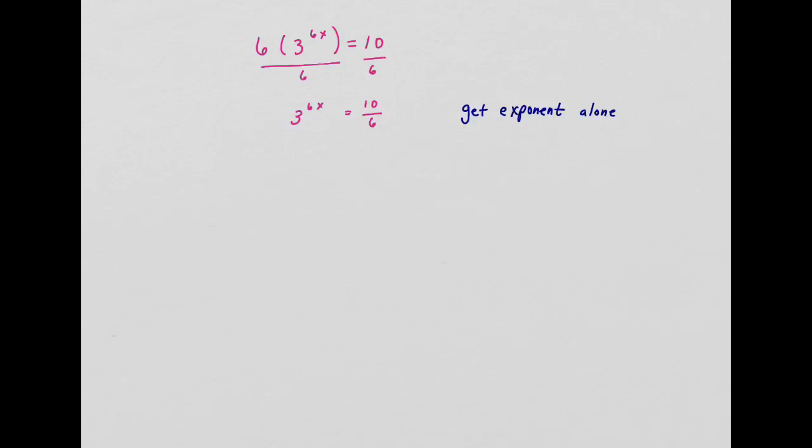Once we get the exponent alone, another way to handle this, other than change of base formula, is to take the log of both sides.